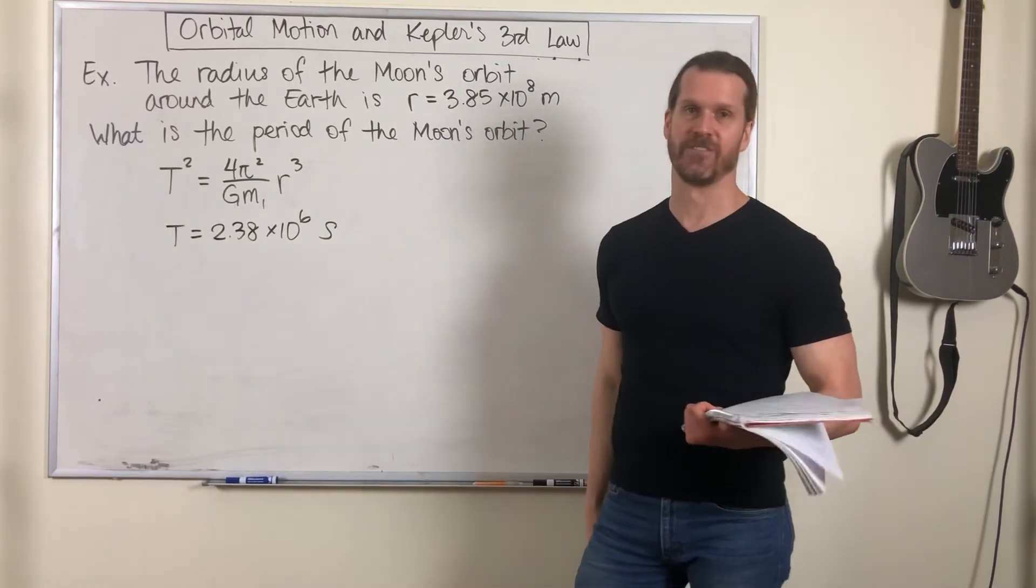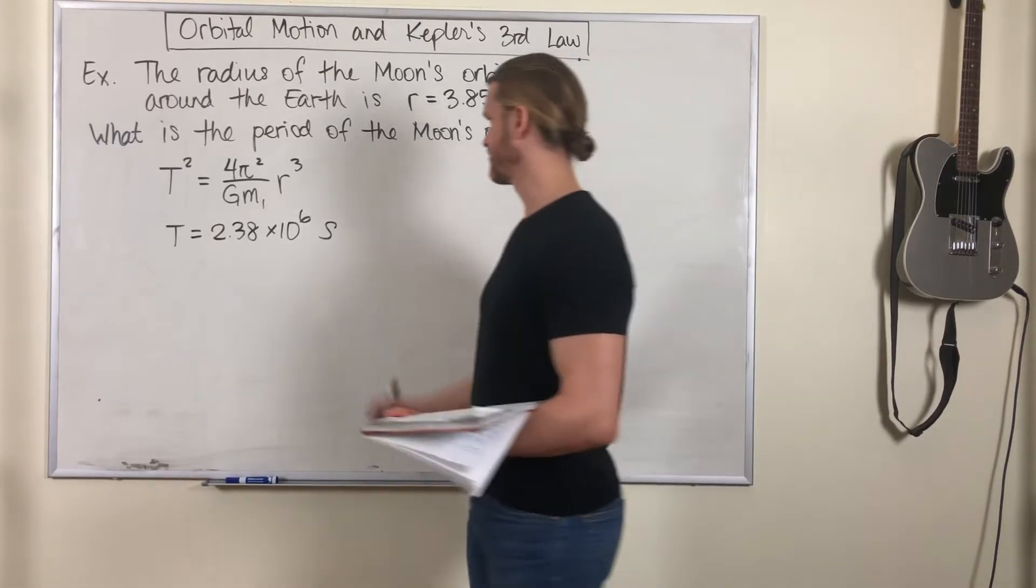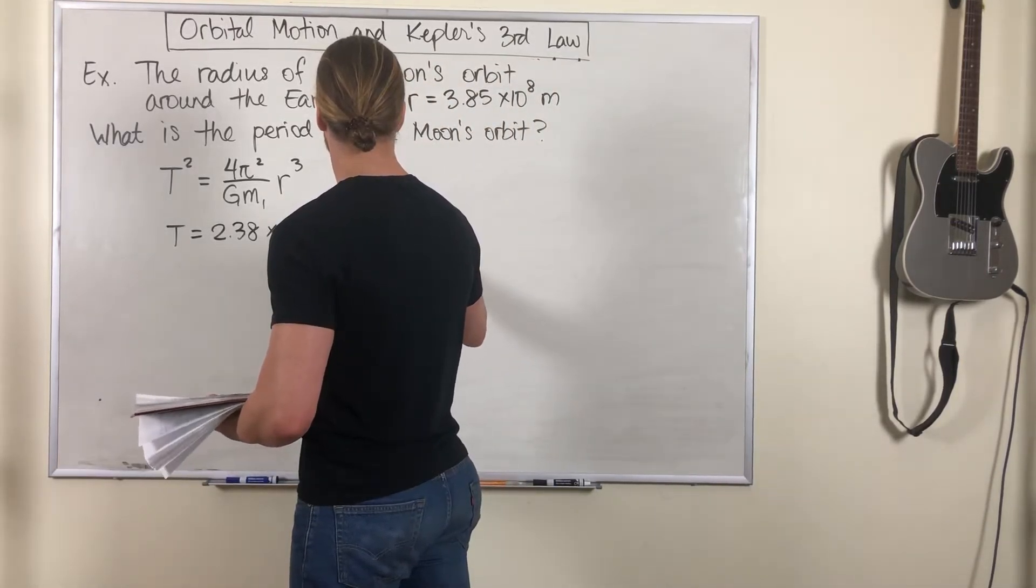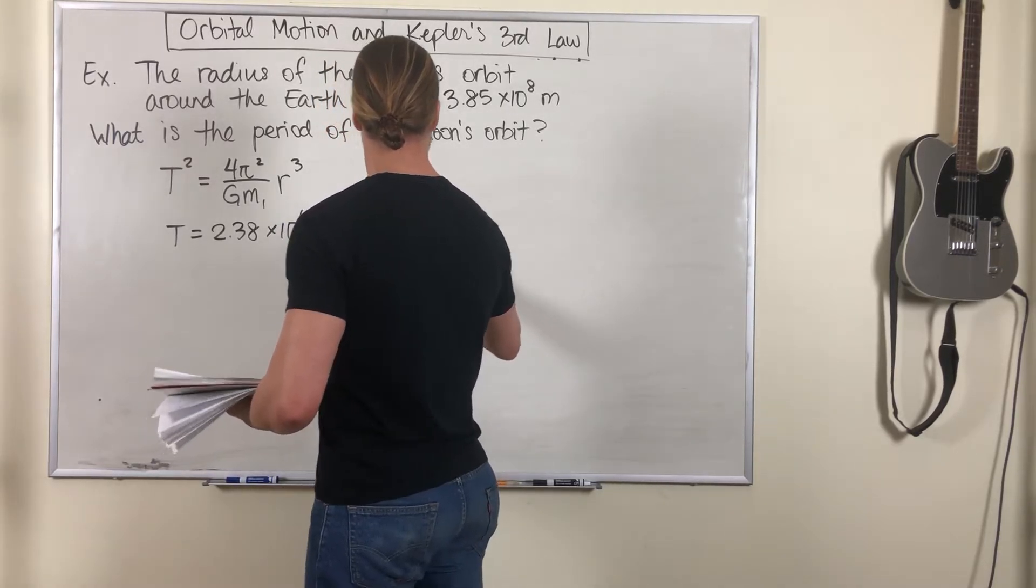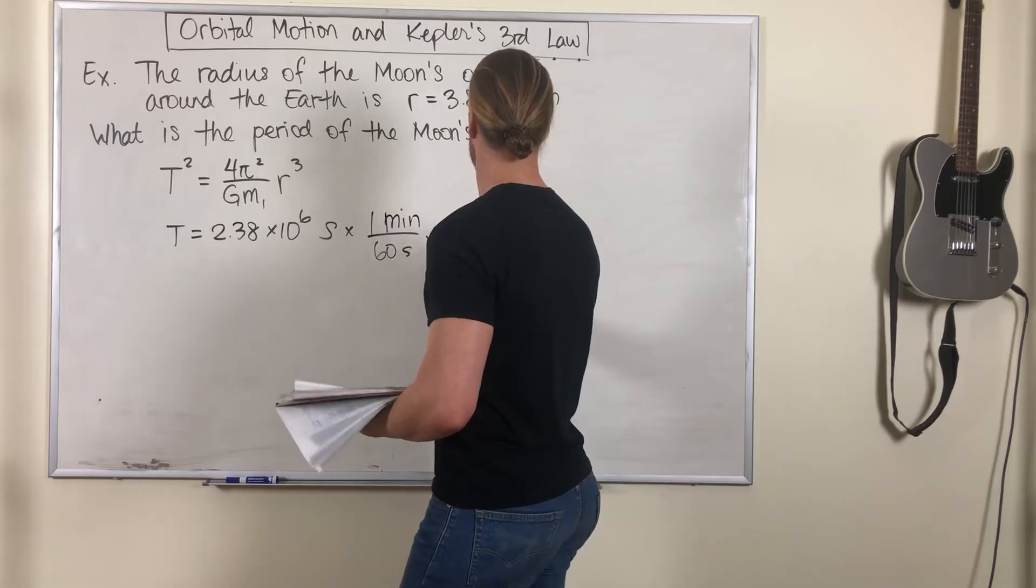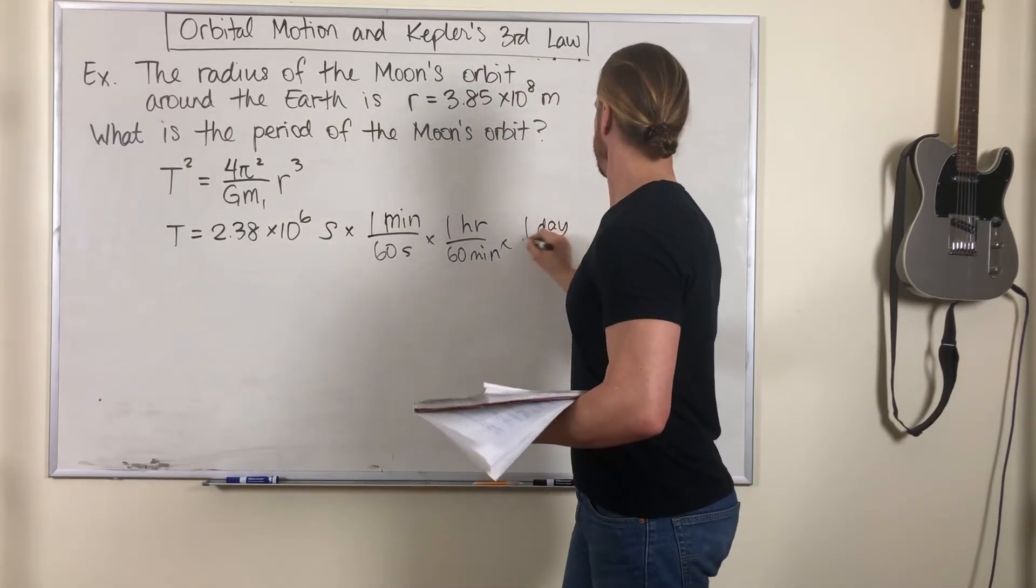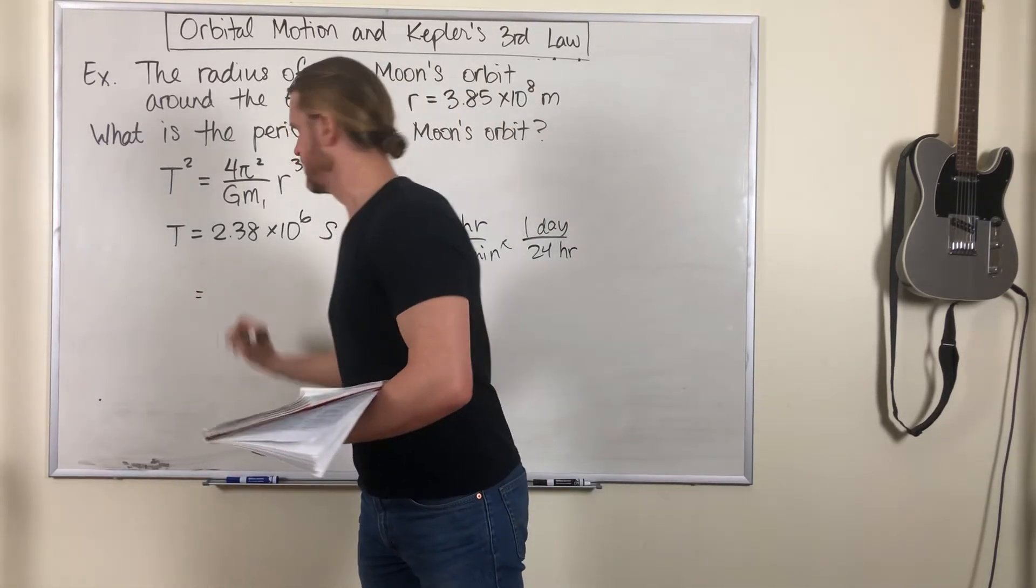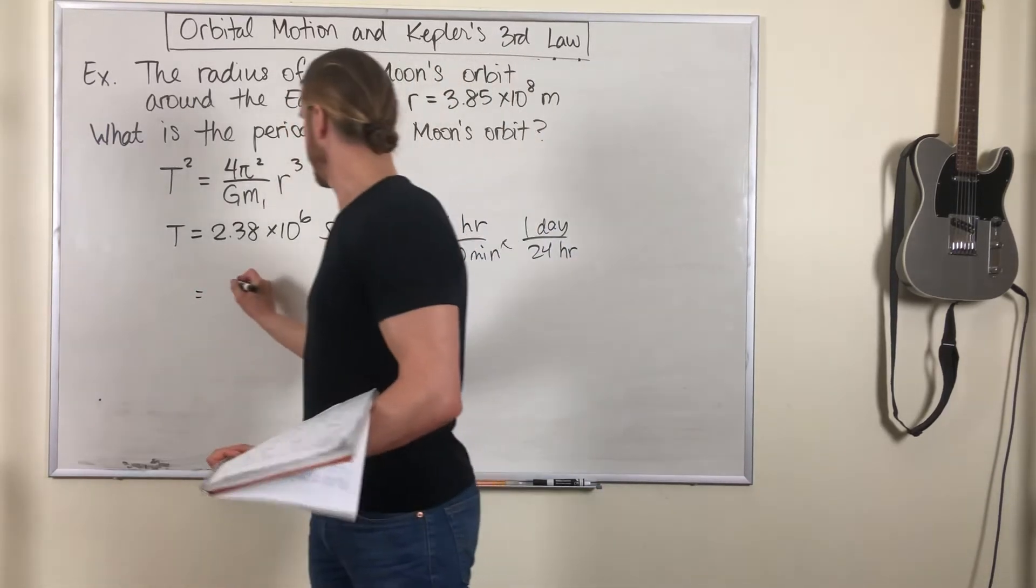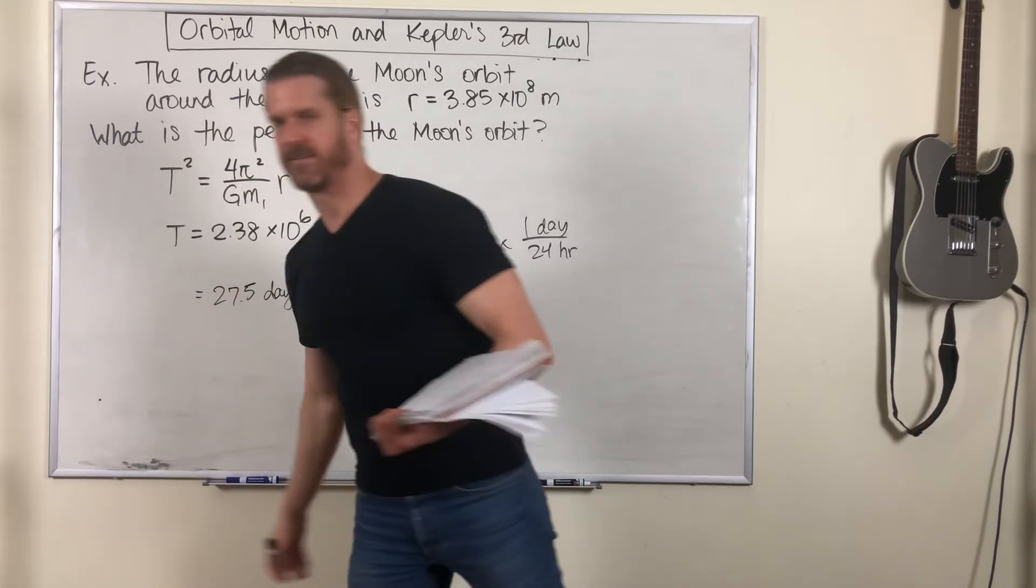Now that probably doesn't feel very intuitive, so let's turn it into days. So 1 minute, 60 seconds, 1 hour, 60 minutes, 1 day, 24 hours, and guess what? That's 27.5 days.